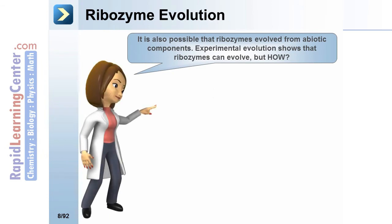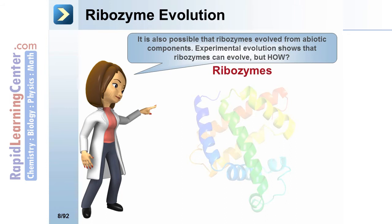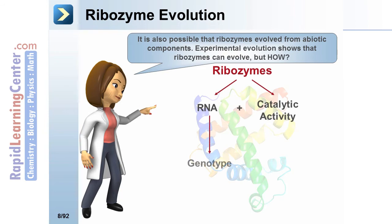It is also possible that ribozymes evolved from abiotic components. Experimental evolution shows that ribozymes can evolve. Ribozymes combine RNA with catalytic activity: the RNA provides the genotype, meaning it can be selected, while the catalytic activity provides the phenotype. The genotype will replicate and the phenotype will evolve.